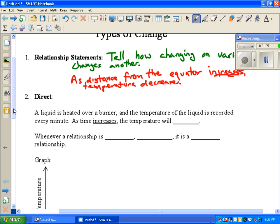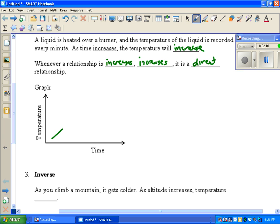Then based on our statement, we have to decide if it's a direct or an inverse relationship. Now, here's an example of a direct. A liquid is heated over a burner and the temperature of the liquid is recorded every minute. As time increases, the temperature will increase. We need to make a relationship statement and we say that one thing increases and the other increases. They're doing the same thing. That's going to be what we're going to call a direct relationship. And a graph for that is generally going to tilt upward this way.